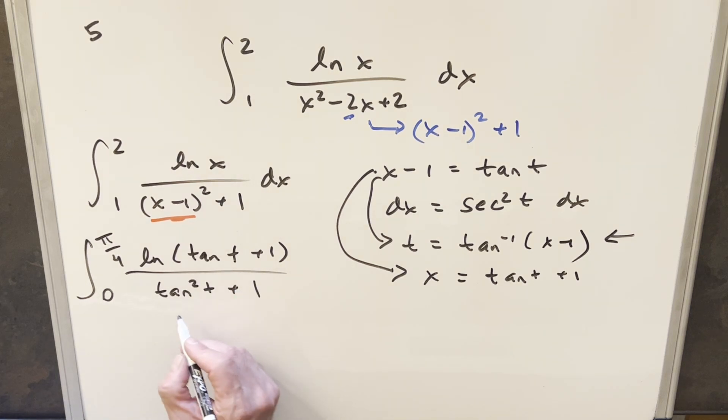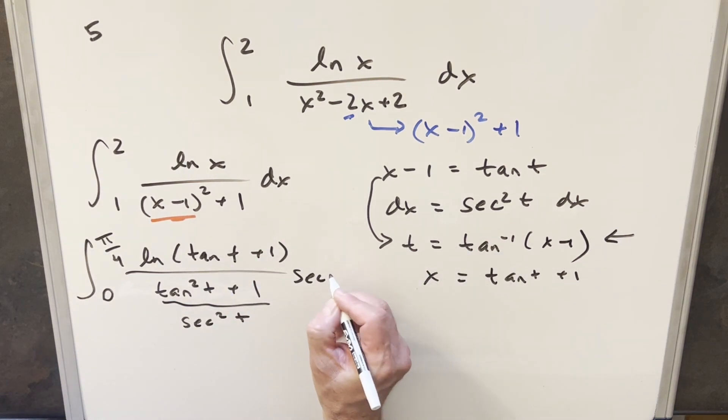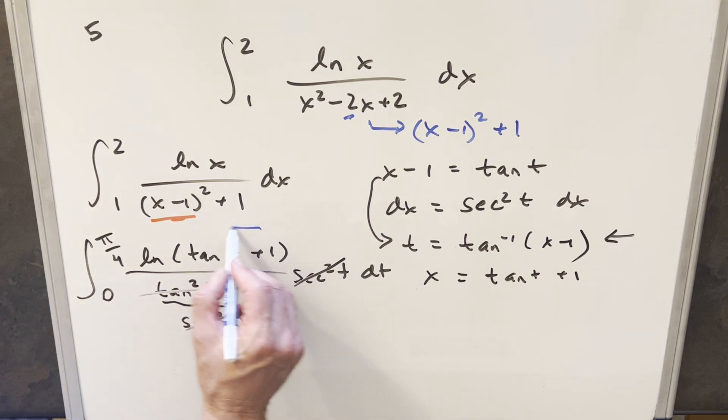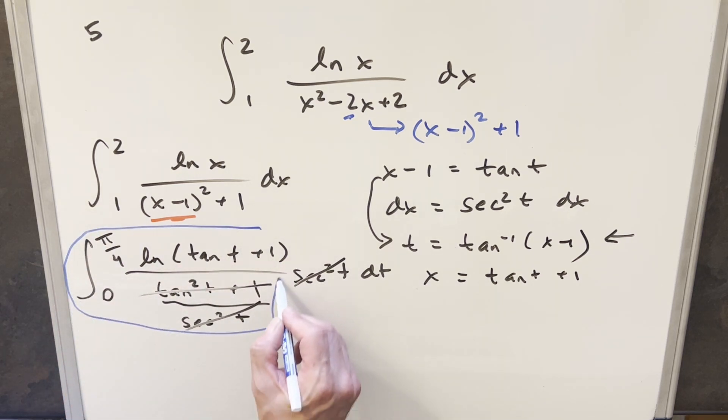Now that's really nice because of the identity, tan squared plus 1, this is the same thing as secant squared of t. And then finally, our dx value, that's just going to be secant squared t dt. But then we get cancellation because we've got secant squared in the numerator and denominator. And so all we really need to do is just integrate this thing right here.